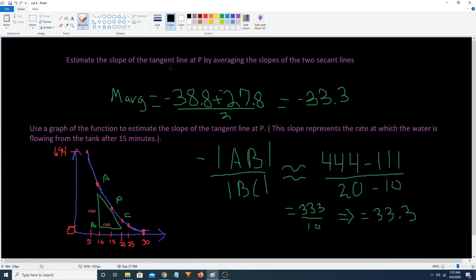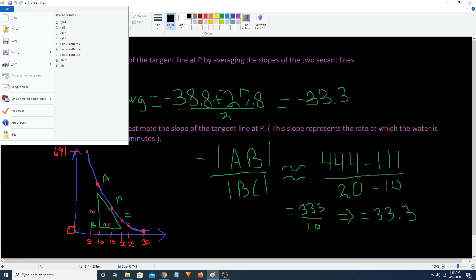Estimate the slope of the tangent length at P by averaging the slopes of two secant lengths. And let's take a look at our averages again. So let's go back here.